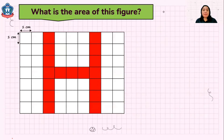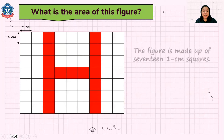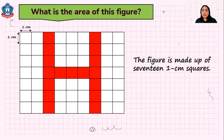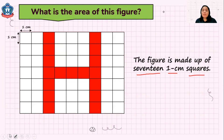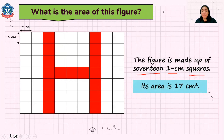How about this figure? This figure is the letter H. Can you find the area of this figure? This figure is made up of 17 1 cm squares. So what is the area of this figure? This figure is 17 square centimeters. So this is the area of this figure.